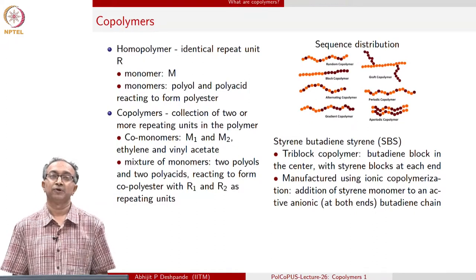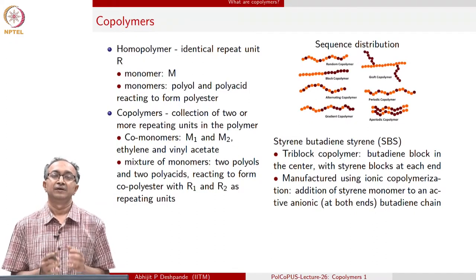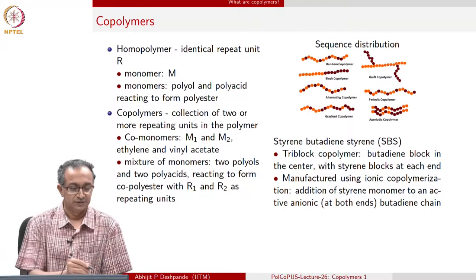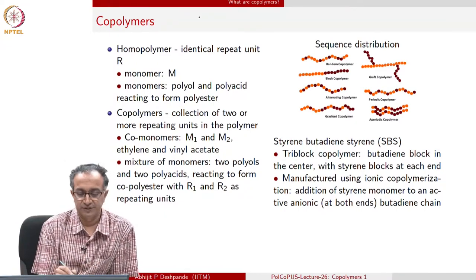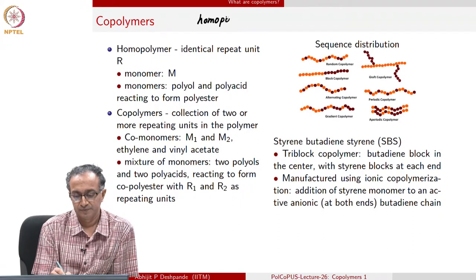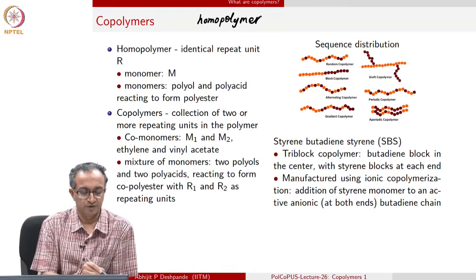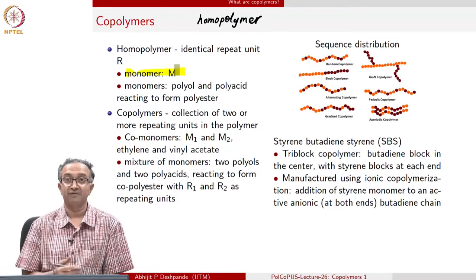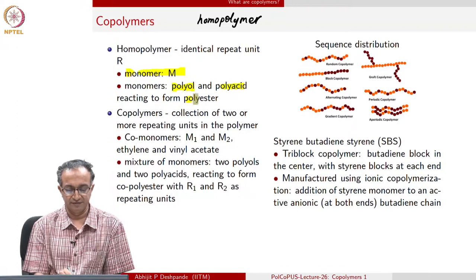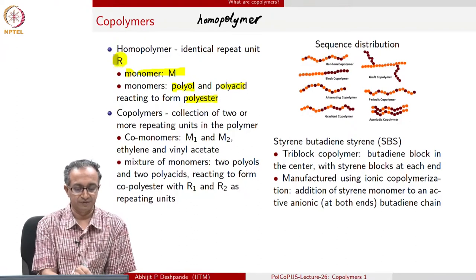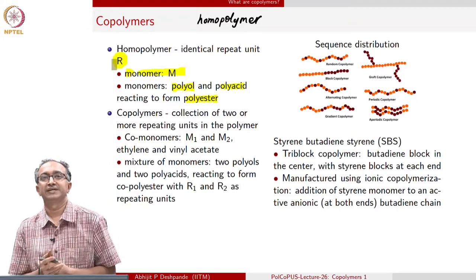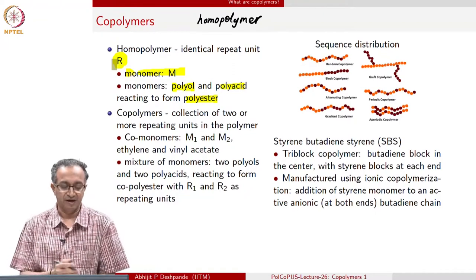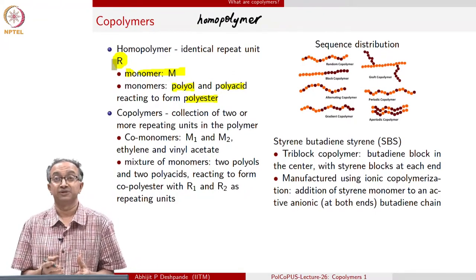Copolymers are polymeric materials which have repeating units or monomers which themselves can also form a polymer. Copolymers are generally contrasted with homopolymers. For a homopolymer, we have monomer M, or if we have a polyester, then we just have a polyol and polyacid giving us a polyester, and the repeating unit will be R. This is a homopolymer in which case you have a monomer attaching itself — like polystyrene — or you can have monomers reacting to give a repeating unit which is a polyester repeating unit.